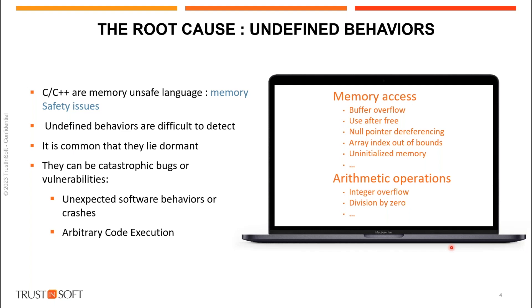Software written in C/C++ can crash, exhibit unexpected behavior, or miss critical actions entirely. These issues can be exacerbated by undetermined code flow, where the program's next step is unpredictable. The root cause is what the standard calls undefined behavior. C and C++ are not memory-safe languages, so you can clearly have memory safety issues — known as buffer overflow, use-after-free, null pointer dereferencing, integer overflow, or division by zero.